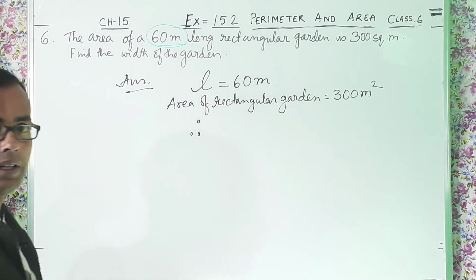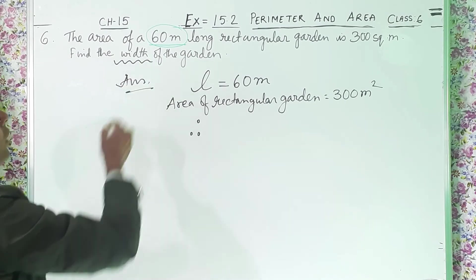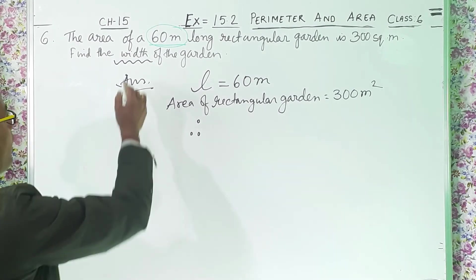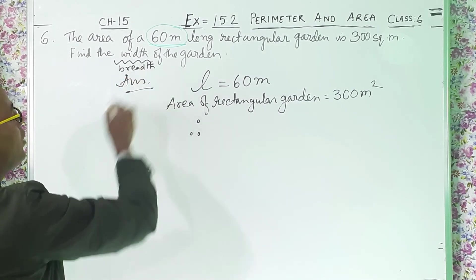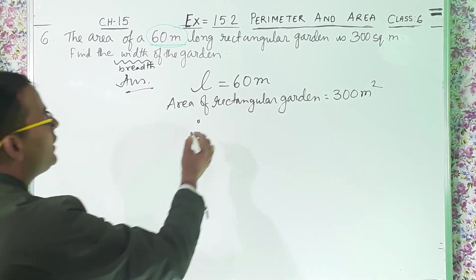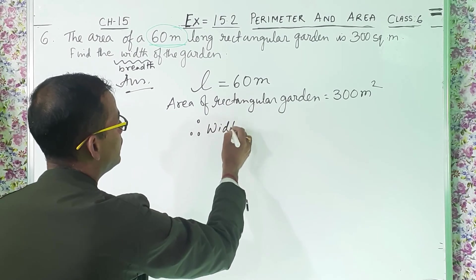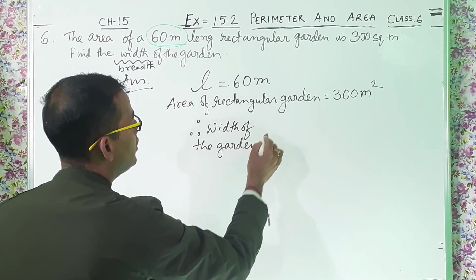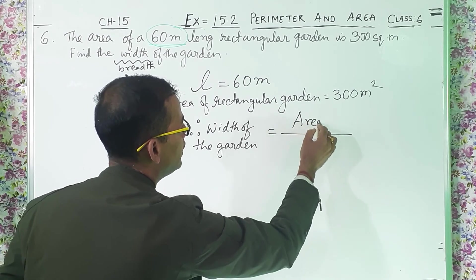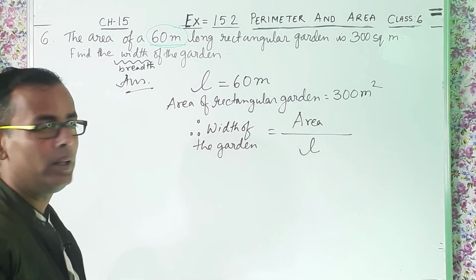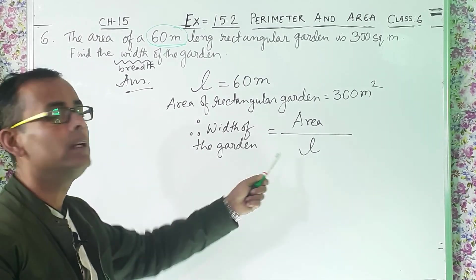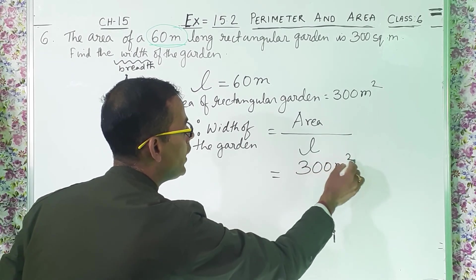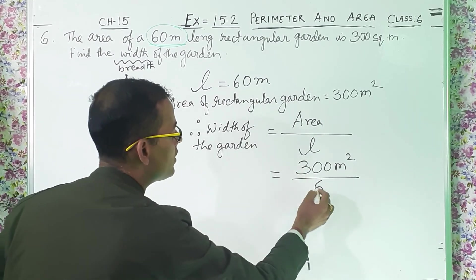Therefore we have to find out what? Find the width. Width means only breadth. So I have to find out the breadth. Width of the garden equals area of rectangular garden divided by length of the rectangular garden — 300 meter square divided by 60 meters.